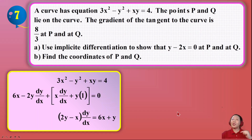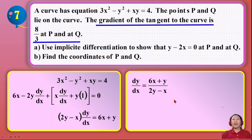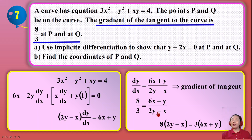After rearranging, dy/dx is expressed in terms of x and y. You can check out the implicit differentiation video on my channel for the full rearrangement. We then substitute the given gradient of 8/3 into the dy/dx expression and rearrange so that we can arrive at what the question requires, which is y minus 2x equals 0.